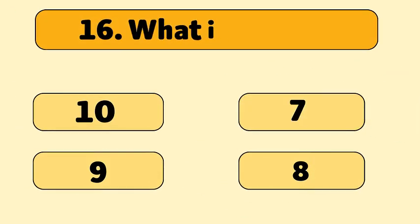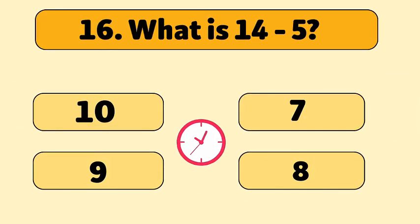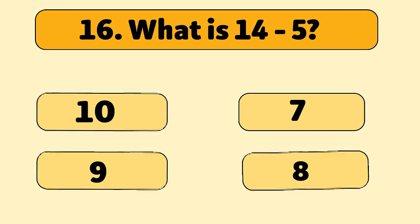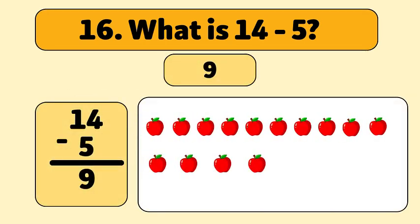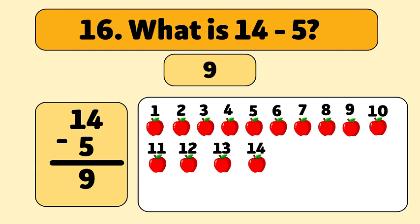What is 14 minus 5? The answer is 9. We start with 14 apples and take away 5. 1, 2, 3, 4, 5. We have 9 apples now.